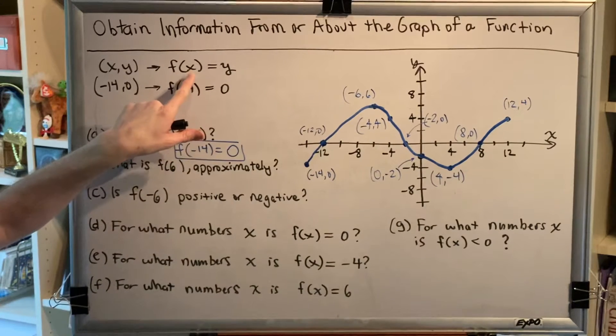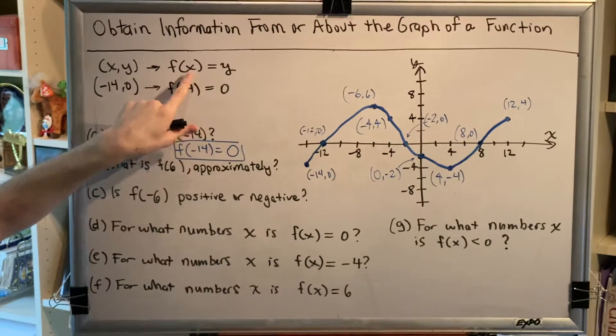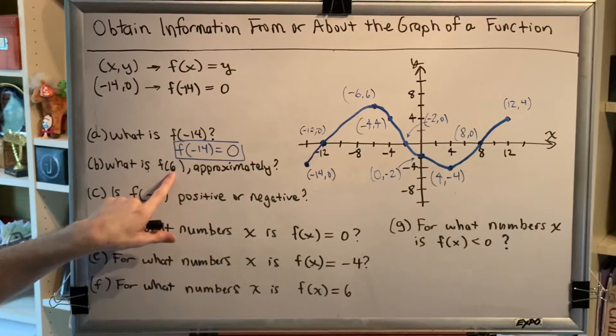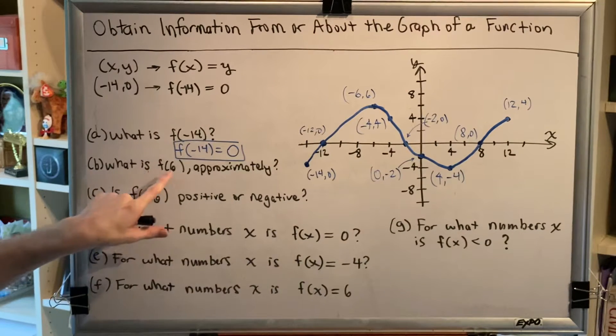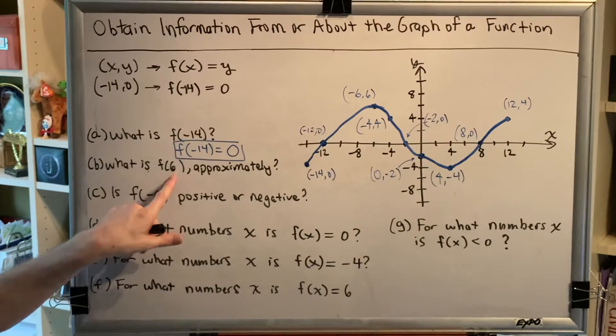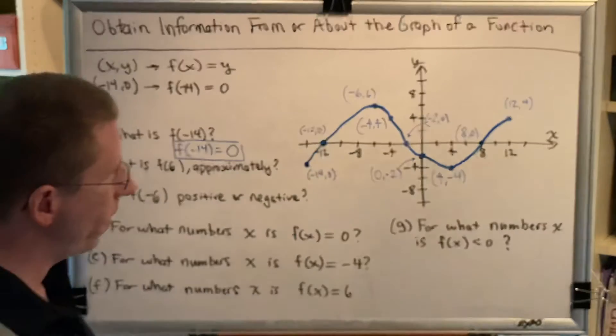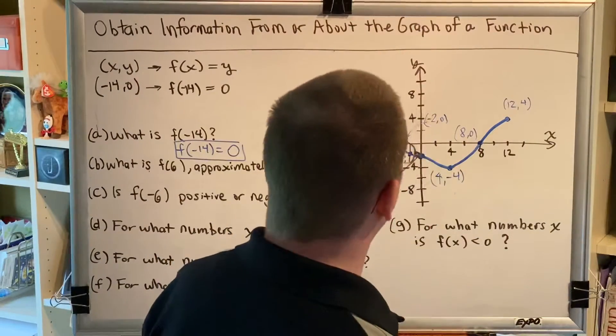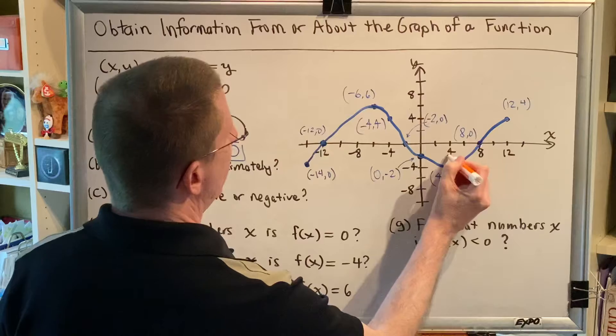The thing inside the parentheses is the input, which makes it x. So f(6) means x is 6. When you want to find f(6), that means you're looking for what is the y coordinate when x equals 6. Let's see if we can find the point on this graph that has an x of 6. Here's the x-axis, and here's 4, and here's 8.